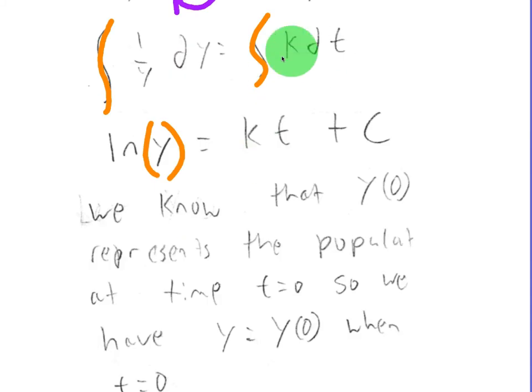So anyway, once we integrate the left, we get natural log of y. On the right, the integral of k times dt is kt using the constant multiple rule for antiderivatives. Don't forget your plus C.